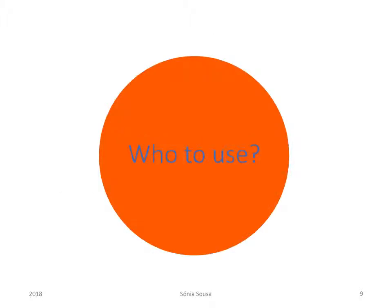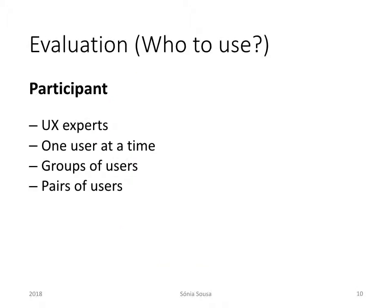Who to use during the evaluation process? We can use either experts — UX experts — we can use one user at a time, a group of users, or even a pair of users.